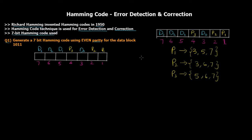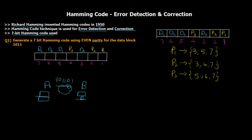Whenever a transmission happens from A to B — say A is a computer transferring data in digital binary format, being transferred to location B which is another computer over a network — sometimes these bits get corrupted. For example, if A is sending 101101, B might receive 111101 — one bit got flipped. It might also be the case where multiple bits get corrupted.